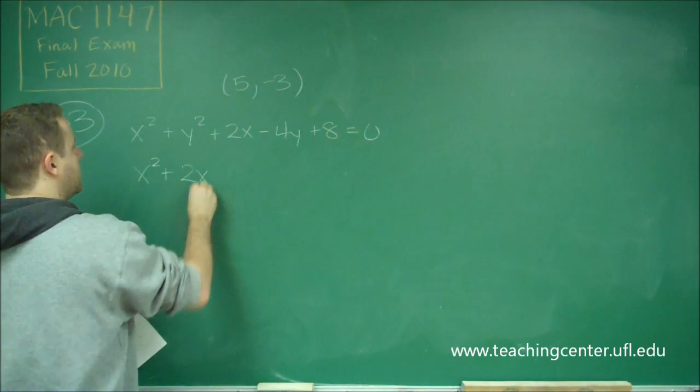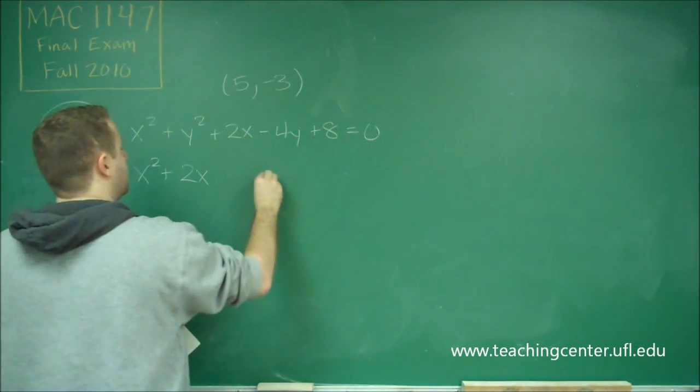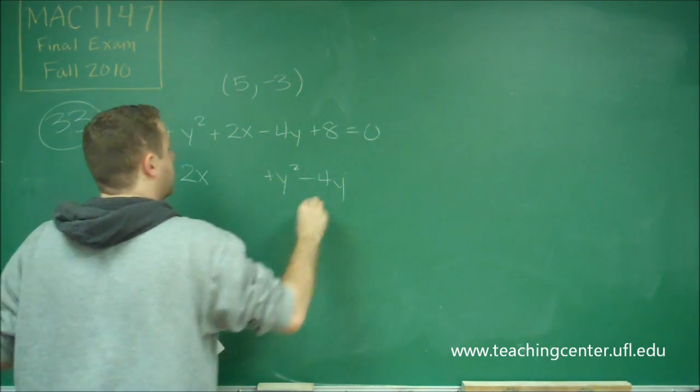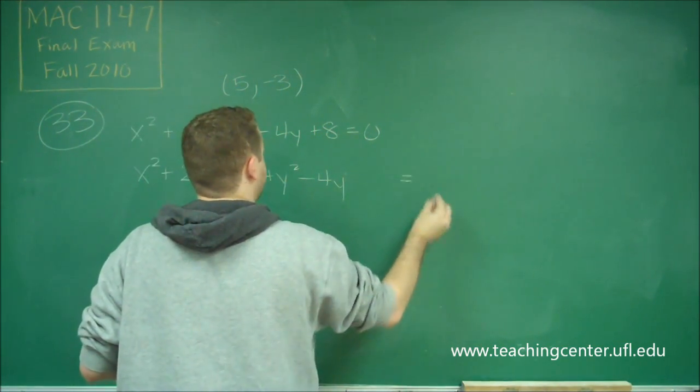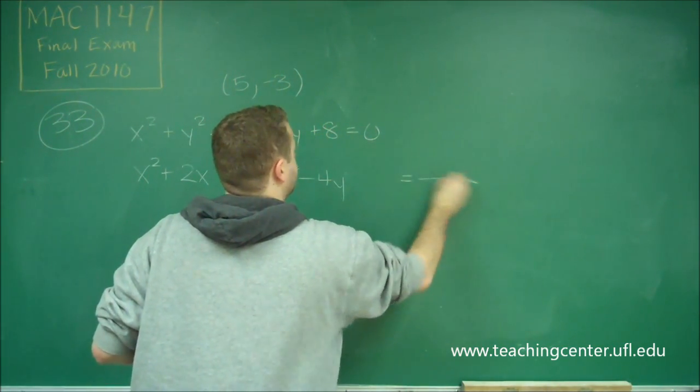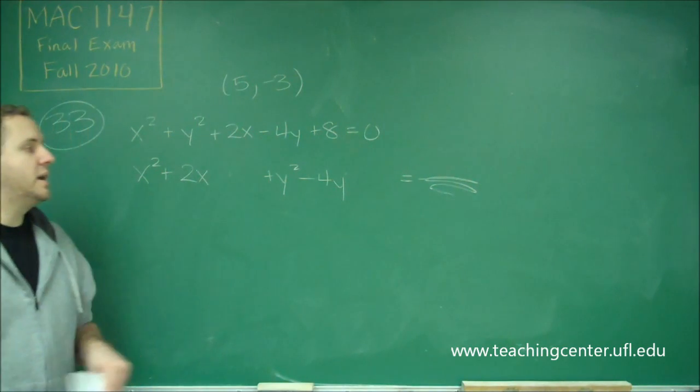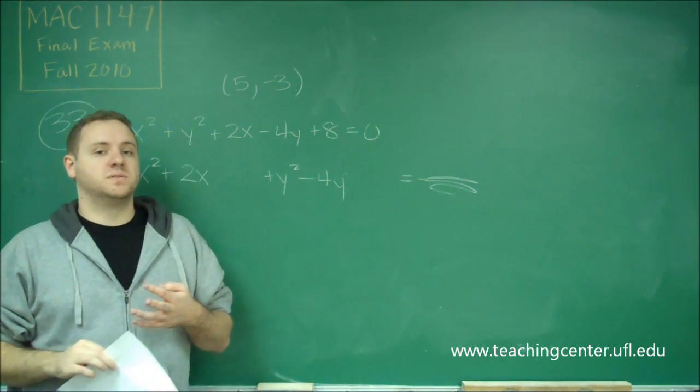So we need to group everything together accordingly. x squared plus 2x, and leave a space, and then we have y squared minus 4y, and leave a space, equals, and the constant can go over here, but like I said, we don't care what's over there, because all we want is the center of the circle.